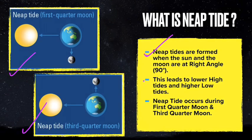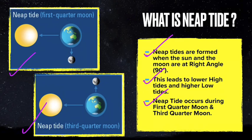Neap tide leads to lower high tides and higher low tides. The neap tide occurs during the first quarter moon and the third quarter moon.